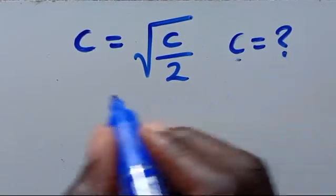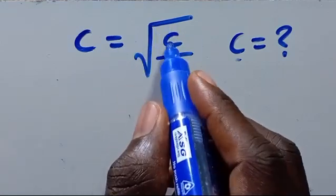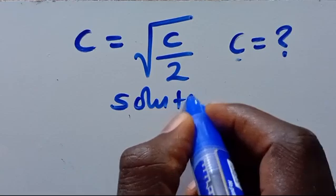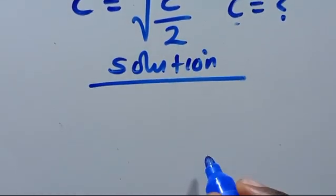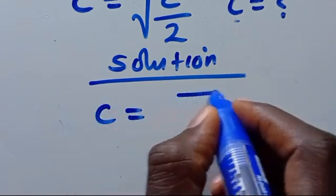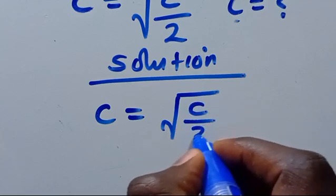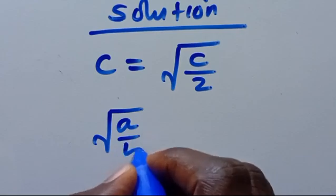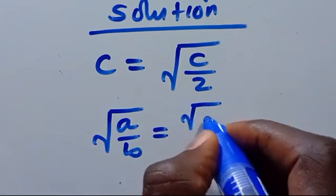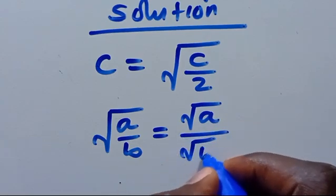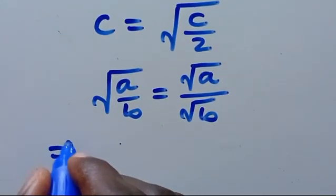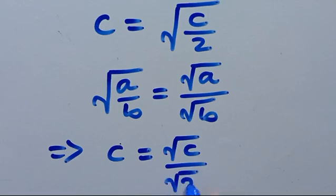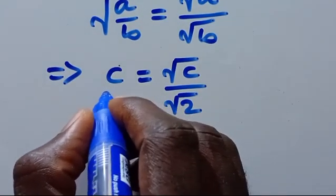What is the value of C given that C equals the square root of C divided by 2? Let's find the solution. We recall that the square root of A over B always equals root A divided by root B. So from here we have C equals root C over root 2.